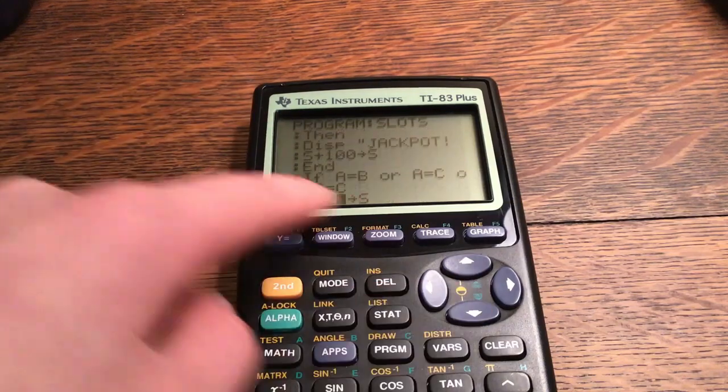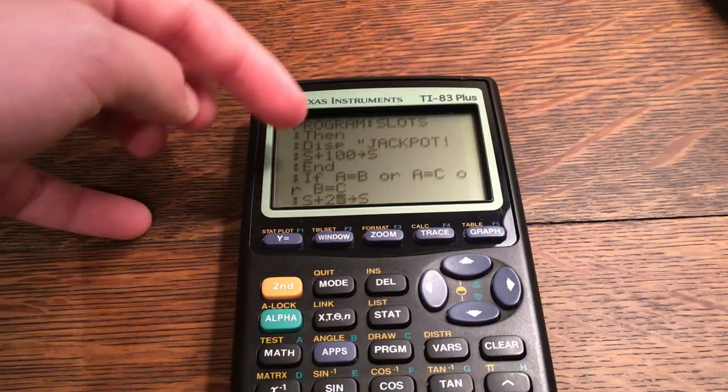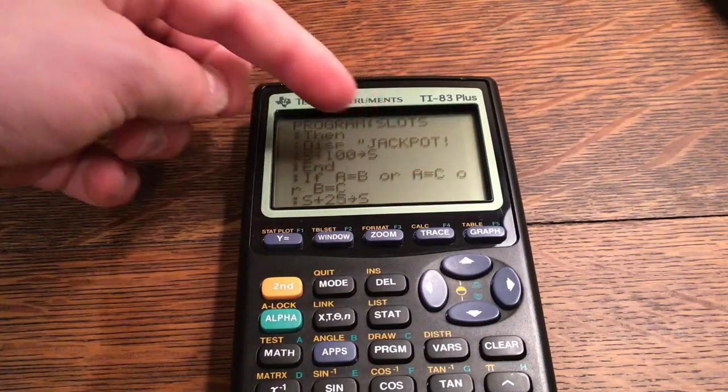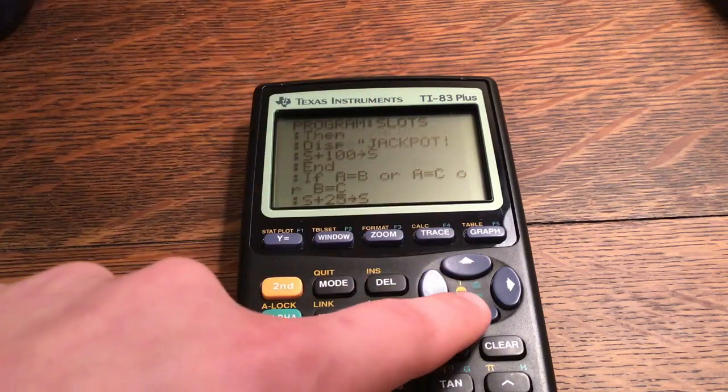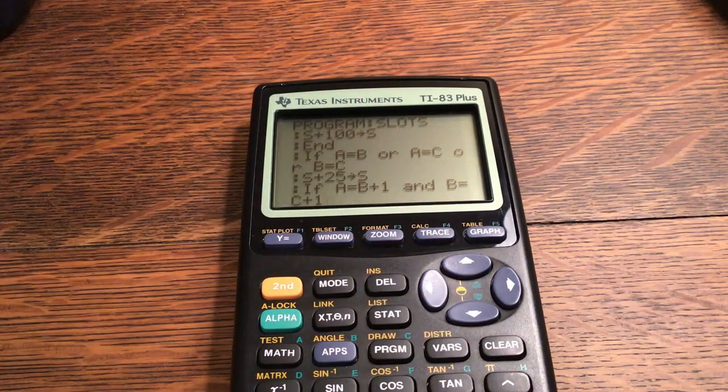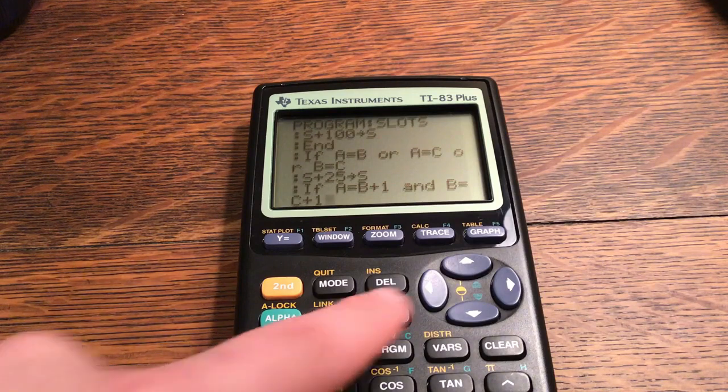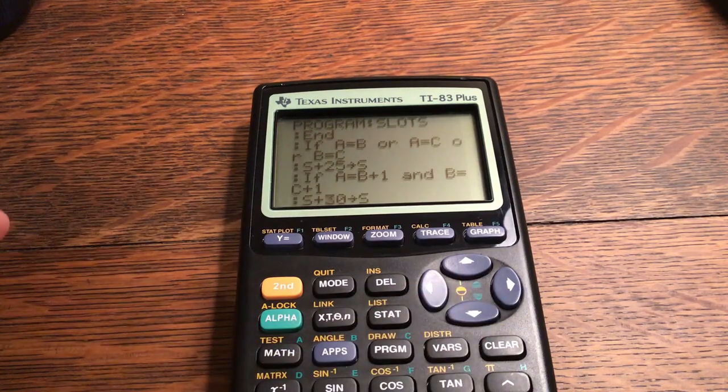Because you have all three that are sevens, it counts this for your points and it also does this guy right here. So if A is equal to B, or A is equal to C, or B is equal to C, S plus 25 stored to S. You get 125 points there.